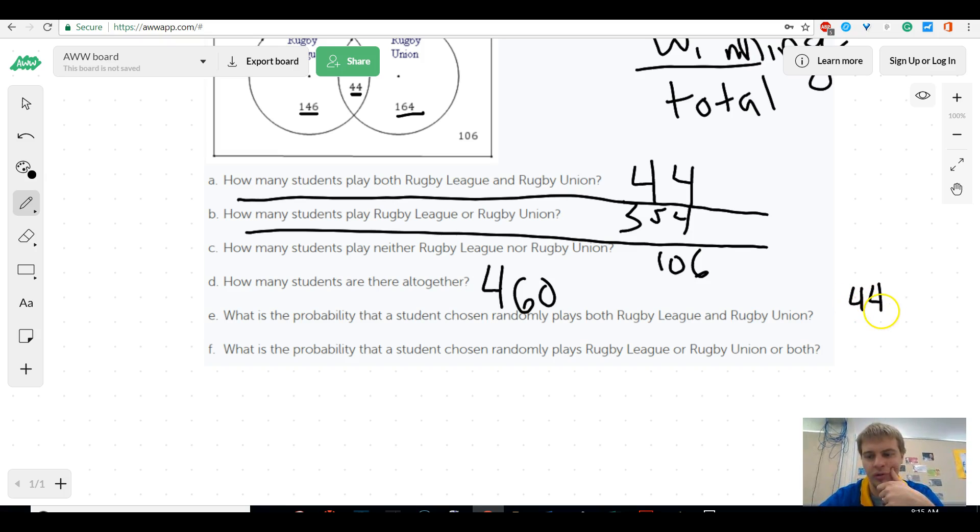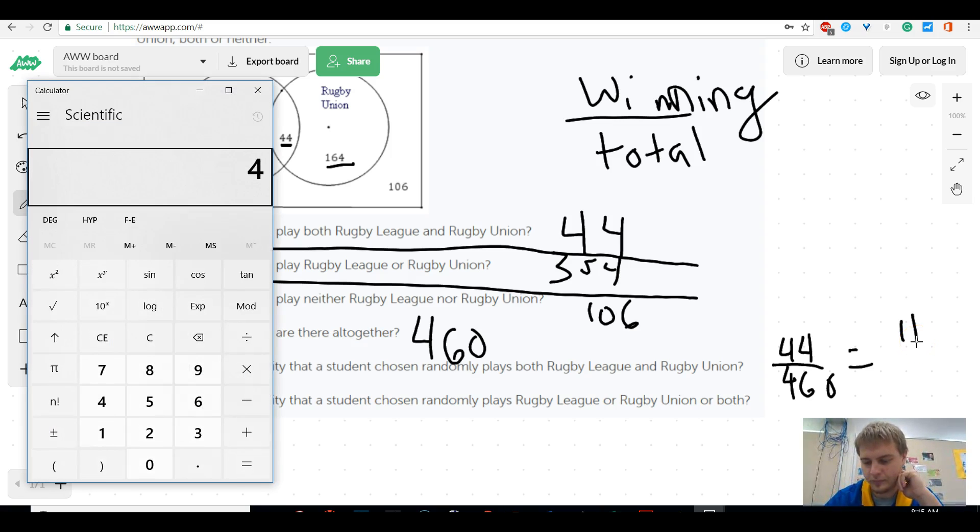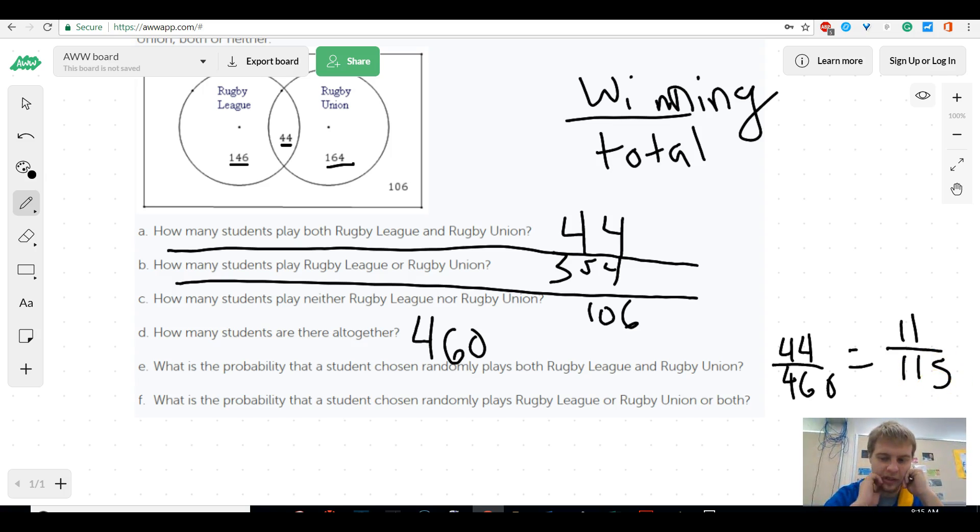So that would be 44 over 460. On MathSpace, it's going to want you to simplify that fraction. On a test, I don't care. I actually like this answer better than the simplified because I get to see where all the numbers come from. But they're going to want you to put something like, I think 11 over 115. So just be careful if it reduces. There's probably some kind of reducing calculator that you could find on the Internet if you needed to reduce those fractions.